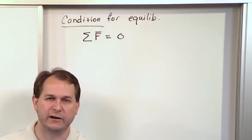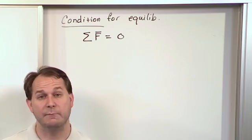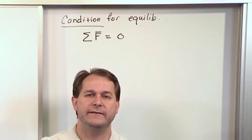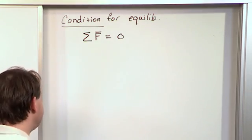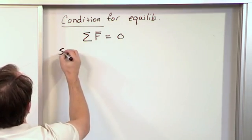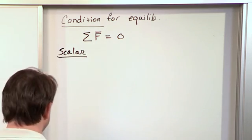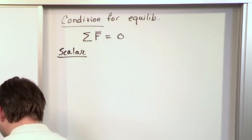Now, if you remember back to the two dimensional case, we said that the vector form was given by this, but we can sometimes use the scalar form of these conditions. If you remember from before, I'll switch colors here.